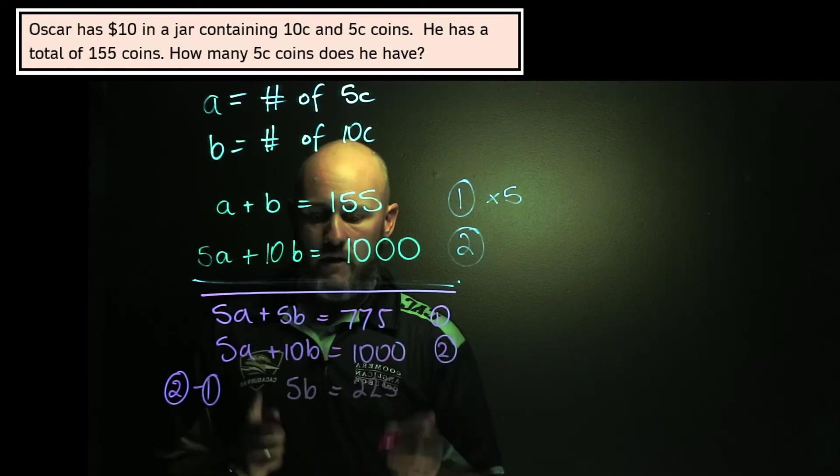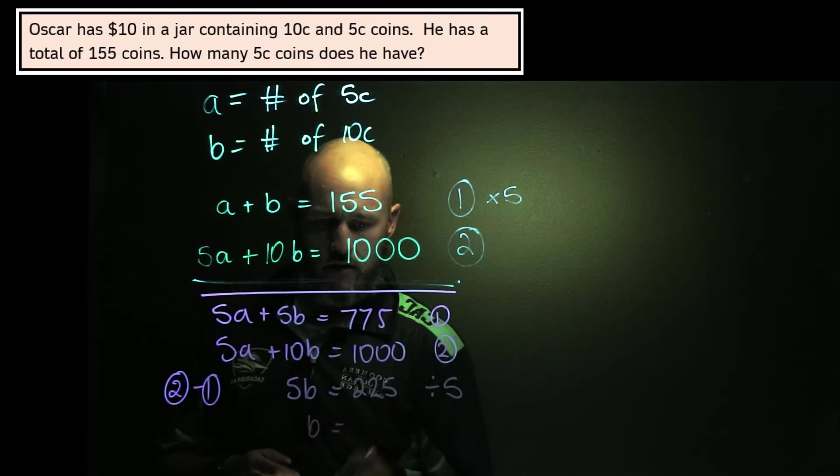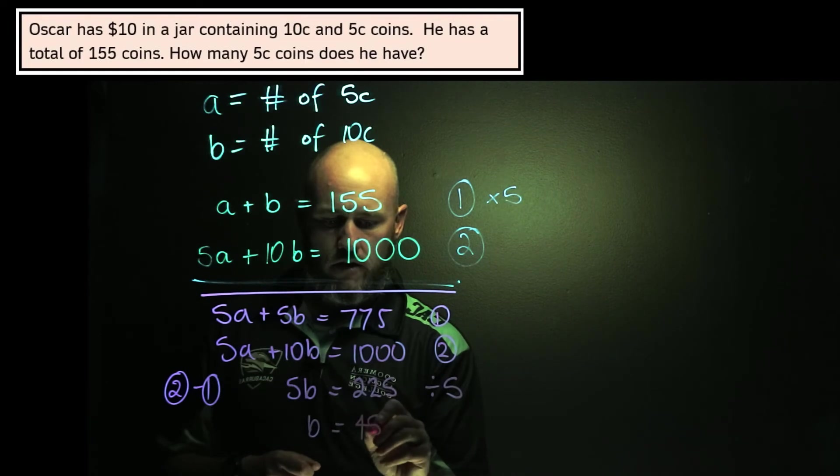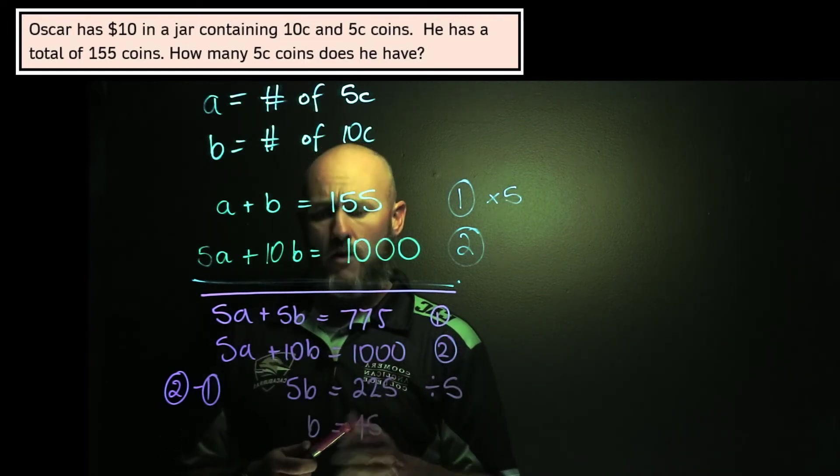So we're happy with that. And then of course I just divide by 5. So B, 225 divided by 5 is 45. There are 45 10-cent coins. So there are 45 10-cent coins.